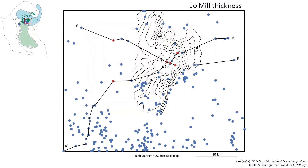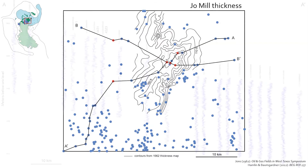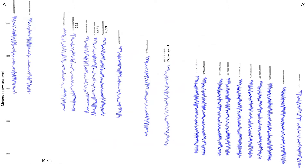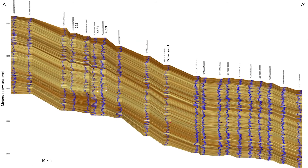Here's our study area again. The next slides will show stratigraphic interpretations across sections AA' and BB'. Here's cross-section AA', roughly oriented down depositional depth. The depth scale on the left is in meters below sea level. The logs are gamma ray. Here's the uninterpreted cross-section and the interpreted cross-section. The colors represent lower V-shale, with yellow representing lower V-shale. You might also notice color strips adjacent to some of the wells — 3521, 4431, 4323, and Dickinson.